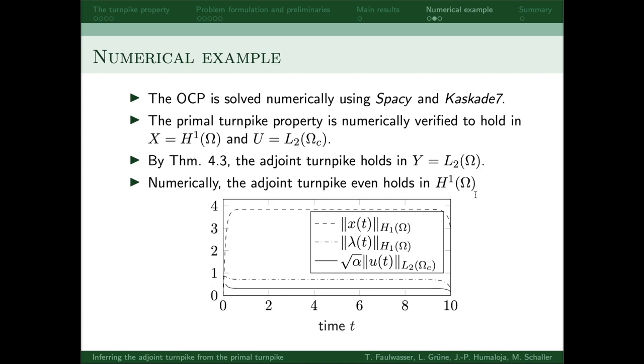Numerically, we see that the adjoint turnpike appears to hold even in the stronger H1 norm, but we don't have a theoretical justification for this.